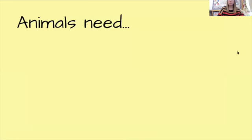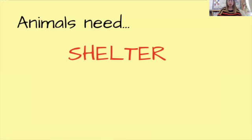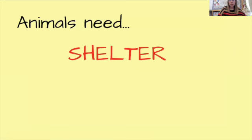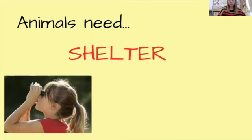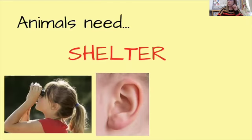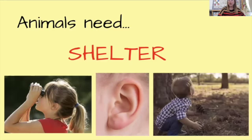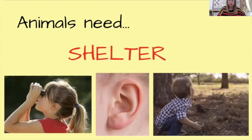We know that animals need food, we know they need water, we know they need to breathe air. What else is it that animals need? Well, they need a shelter. In the past few mysteries we learned some ways that you can find an animal shelter. The easiest way would be to use your eyes and look. You can also listen with your ears — listen for the animal making noise — or you can gather evidence, gather things that might belong to that animal to help you notice other things about where that animal lives.